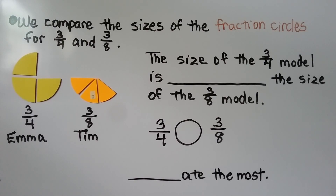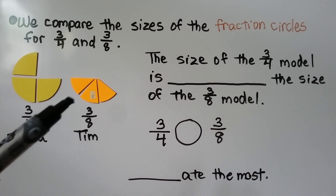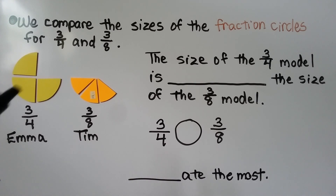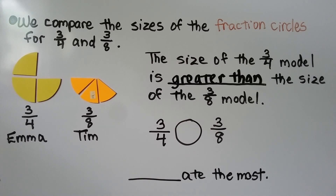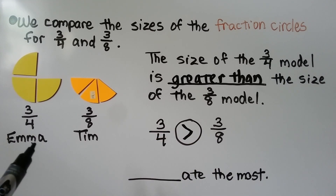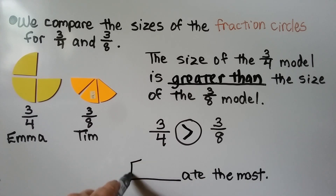We compare the sizes of the fraction circles for three-fourths and three-eighths. The size of the three-fourths model is larger — it's greater than the size of the three-eighths model. There's a lot more pizza here. So we put a greater than sign: three-fourths is greater than three-eighths. So who ate the most? Emma ate the most. Three-fourths is greater.